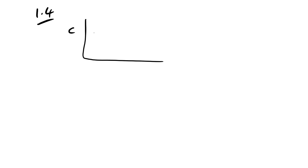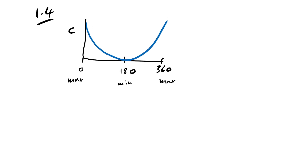Question 1.4: we have a rotary capacitor. When turned from 0° to 360°, at 0° the plates are fully aligned giving maximum capacitance, and again at 360°. There's a minimum at 180° dropping to zero because there's no overlap. Some people think it'll curve, but actually it changes linearly because the area changes at a constant rate when we turn it at a constant angular speed.